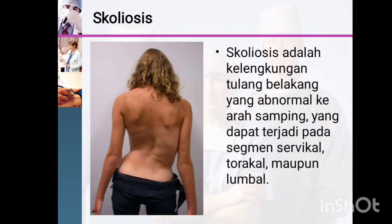Let's start with the definition of scoliosis. Scoliosis is the abnormal curve of the backbone in the sideways direction. Scoliosis patients have a backbone that curves to the left, to the right, or both, so their backbone from the back looks like the letter S.